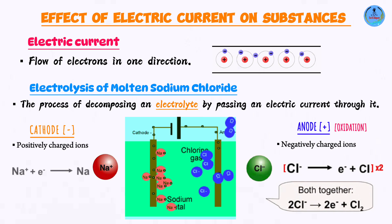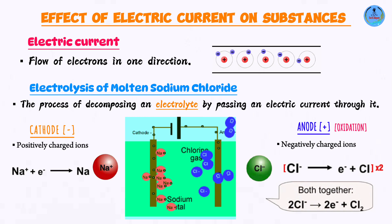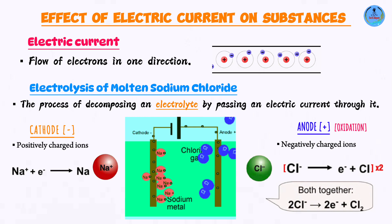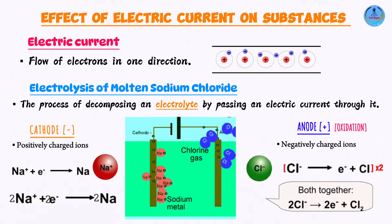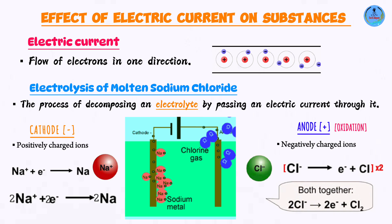What will happen at the cathode? We are having an influx of electrons. These electrons are going to be gained by the sodium ions, so you're going to have sodium atoms being discharged at the cathode. In order to balance the number of electrons at the cathode and anode, we are going to multiply the half-equation by two, such that we end up having two electrons.